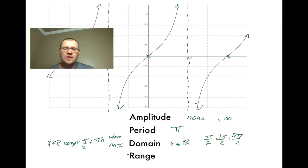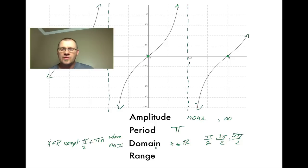Our range is a lot easier. Our range is just how far the graph goes up and down. In this case, you can clearly see that the graph goes forever up and forever down. So our range is y ∈ ℝ.